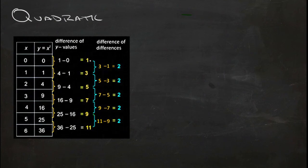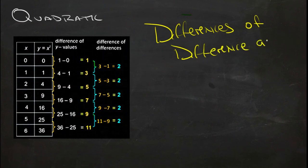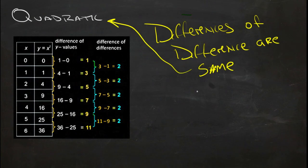Here these numbers change, but the differences between them, going from 1 to 3, that goes up by 2. And going up from 3 to 5, that goes up by 2. So if the differences of the differences are the same, then you have a quadratic model.